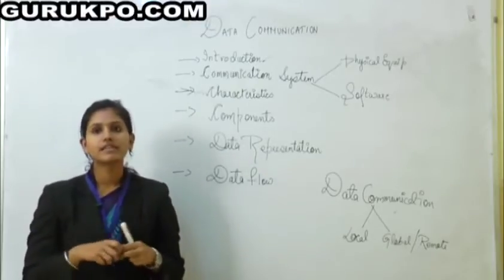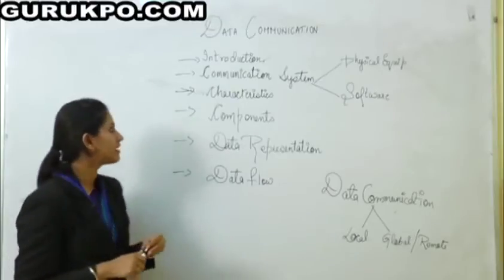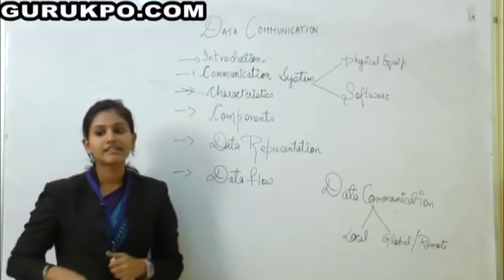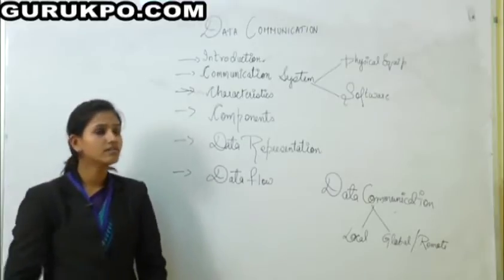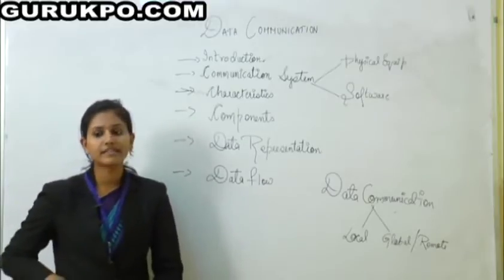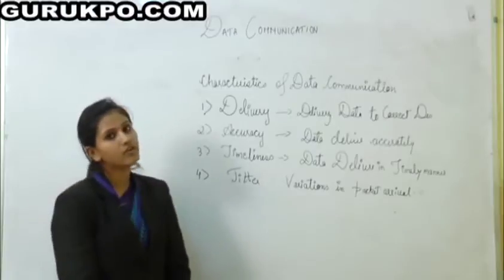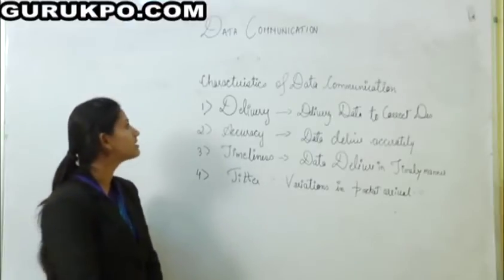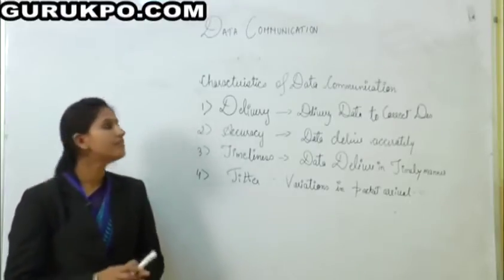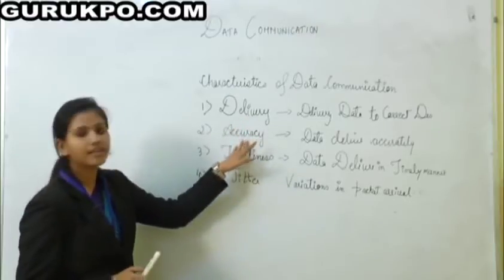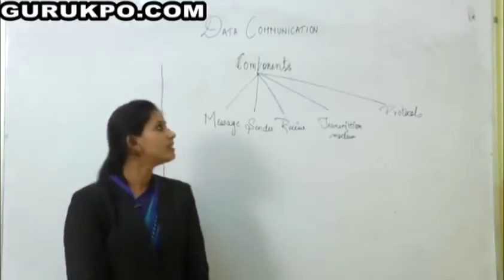Now we are discussing the second topic, that is characteristics of data communication. The characteristics are: delivery, accuracy, timeliness, and jitter.